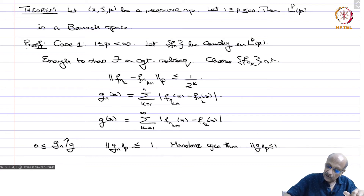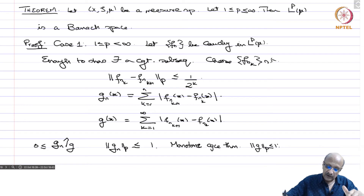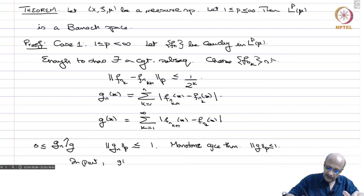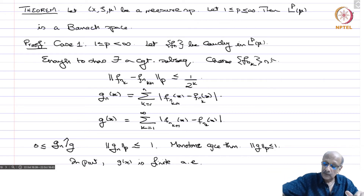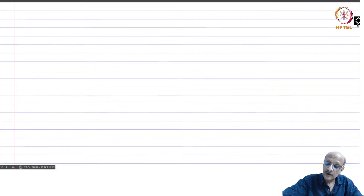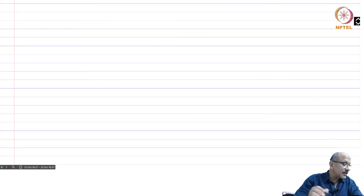Since 0 ≤ g_n increases to g and ‖g_n‖_p ≤ 1, by the monotone convergence theorem the integral of |g_n|^p converges to the integral of |g|^p, and therefore ‖g‖_p ≤ 1 as well. In particular, g(x) is finite almost everywhere, because if its p-integral is less than or equal to 1 it cannot be infinity on a set of positive measure.